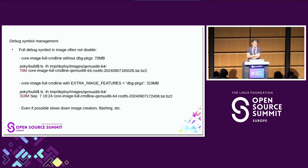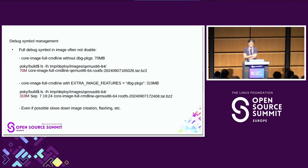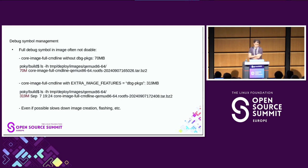In Yocto, debug symbols are split into their own package called the debug package. The naive approach is to deploy all of those debug packages inside your image to your target. But this is often not doable. With one of the Poky standard images called core-image-full-cmdline, the normal image is about 70 megabytes. But if you add the debug packages using extra image features equal debug-packages, the image is about 390 megabytes — the overhead is quite huge.